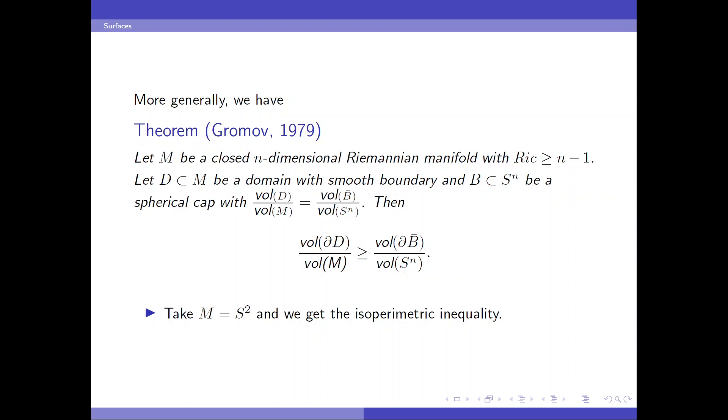More generally, we have the following Gromov isoperimetric inequality. So suppose we have a closed n-dimensional Riemannian manifold, whose Ricci curvature is bounded below by the Ricci curvature of the n-dimensional unit sphere. Then, suppose we have a domain D in M, and we compare it with the model B bar in n-dimensional sphere, so that they have the same volume ratio. Then, the ratio of the volume of the boundary is greater than that of B bar in unit sphere.